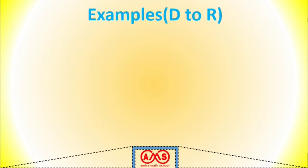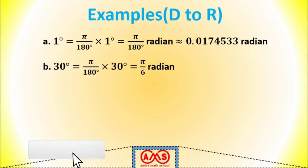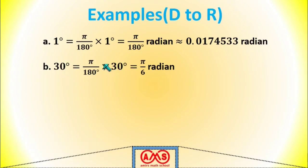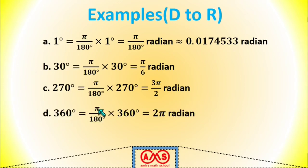Let's see some examples of degree to radian conversion. 1 degree equals (π/180) × 1 = π/180 radians, which is approximately 0.01745 radians. 30 degrees equals (π/180) × 30 = π/6 radians. Similarly, 270 degrees equals (π/180) × 270 = 3π/2 radians. Finally, 360 degrees equals (π/180) × 360 = 2π radians. Substituting π ≈ 3.14159 gives the corresponding decimal values.